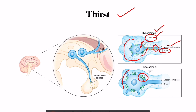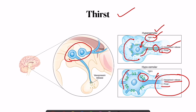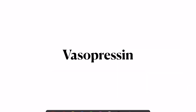This depolarizes the cell, resulting in release of vasopressin, and thirst signals are sent. Additionally, drying of the mucosa in the oral and nasal cavity can also give a sense of thirst. The reverse occurs in hypo-osmolarity, which inhibits vasopressin release and thirst. Vasopressin release and thirst are the two mechanisms by which the body conserves fluid.